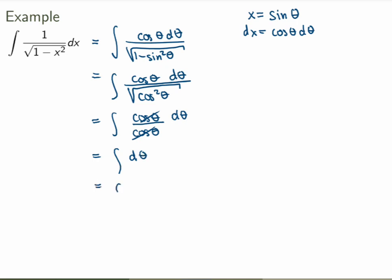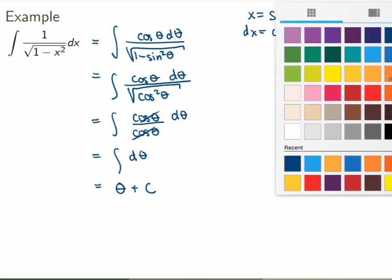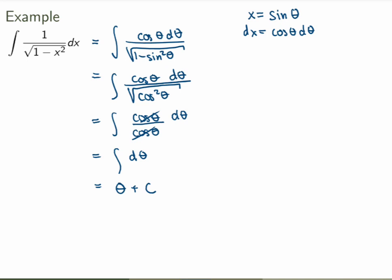But that's not over — we need to rewrite everything in terms of x. What we've done is slightly different from a standard substitution: instead of defining u as a function of x, we've defined x as a function of theta. If x equals sin θ, then θ equals inverse sin of x. Substituting back, we get that the integral equals inverse sine of x plus a constant, which is exactly what we expected.